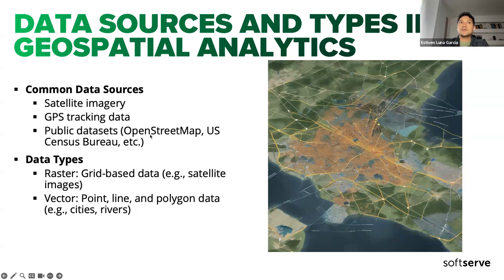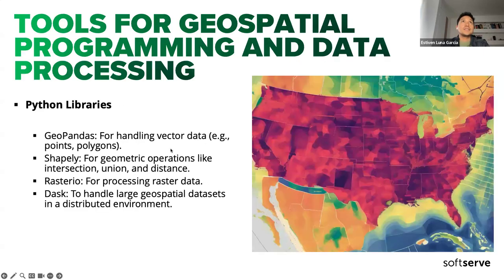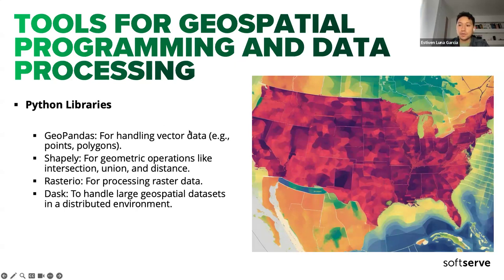For public datasets, we always try to work with OpenStreetMap, which has different representations around the world — in Europe, the US, or Latin America, for instance. For geospatial programming and data processing with Python libraries, we can always use GeoPandas to handle vector data — points, polygons, and different vector types — for geometric operations like intersections, unions, and determining whether something is inside or outside a specific geometry.